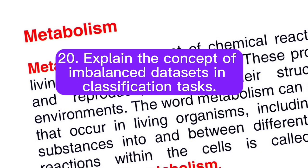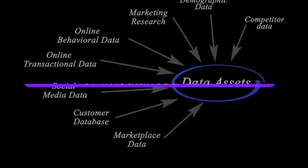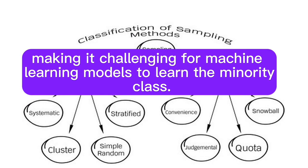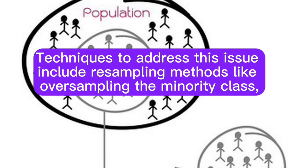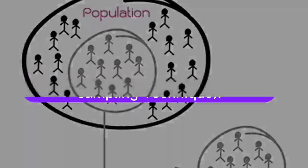Question 20: Explain the concept of imbalanced datasets in classification tasks. How can you address the challenges of imbalanced data? Answer: Imbalanced datasets have an unequal distribution of class labels, making it challenging for machine learning models to learn the minority class. Techniques to address this include resampling methods like oversampling the minority class, undersampling the majority class, and using specialized algorithms like SMOTE (synthetic minority oversampling technique).